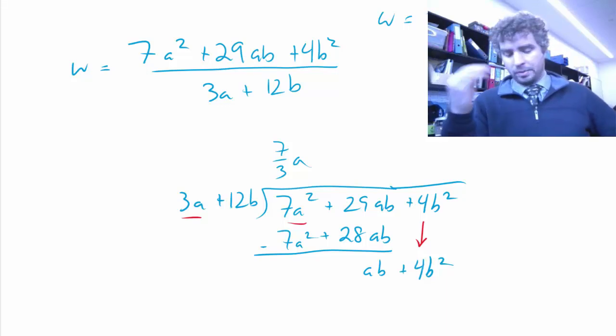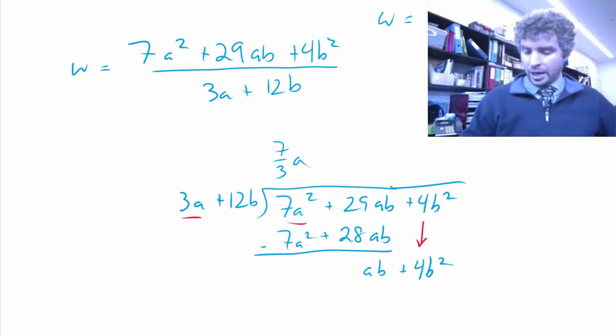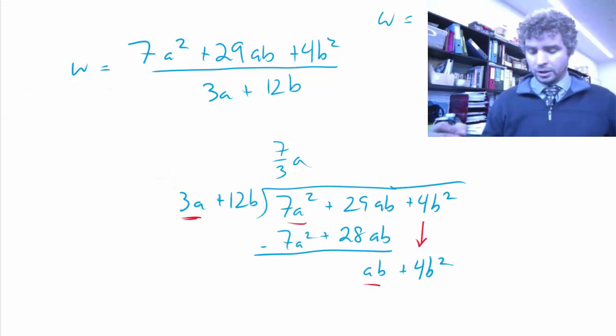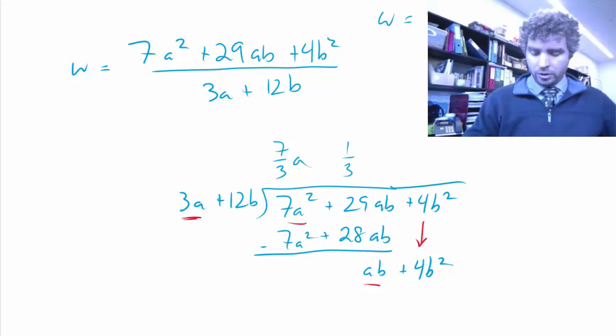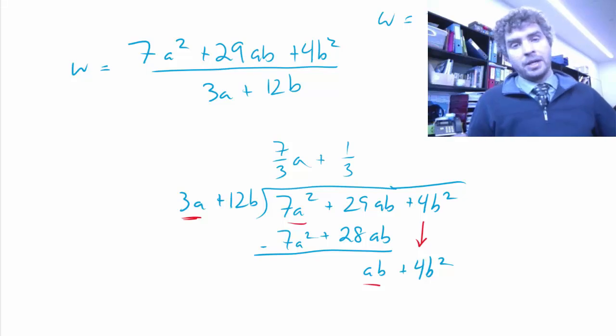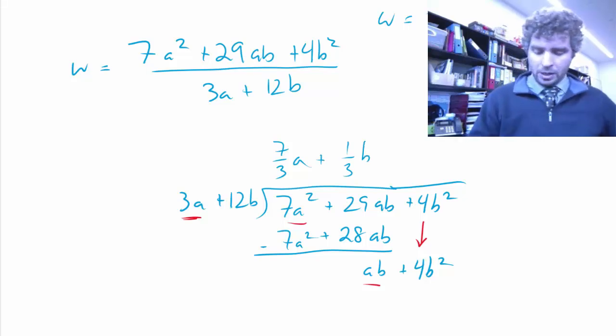And I'm going to repeat, I'm going to start over, so divide the ab by 3a. So, ab divided by 3a, it's like 1ab, so 1 divided by 3 is 1 third. And ab divided by a is just b.